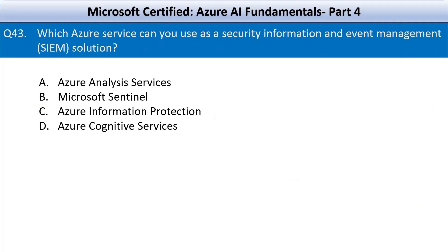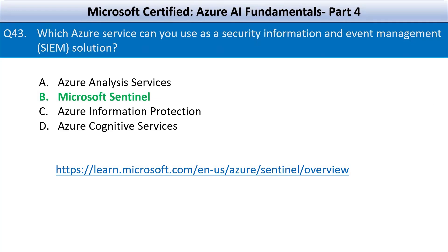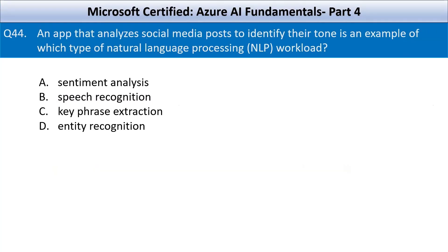Question number 43: which Azure service can you use as a Security Information and Event Management solution? Your options are Azure Analysis Services, Microsoft Sentinel, Azure Information Protection, and Azure Cognitive Services. Microsoft Sentinel is a cloud-native SIEM solution on Azure. Sentinel provides intelligent security analytics, threat detection, real-time monitoring, and automated responses to security incidents. It can collect data from multiple sources including Microsoft 365, on-premise servers, and third-party tools to provide a centralized view of your security landscape.